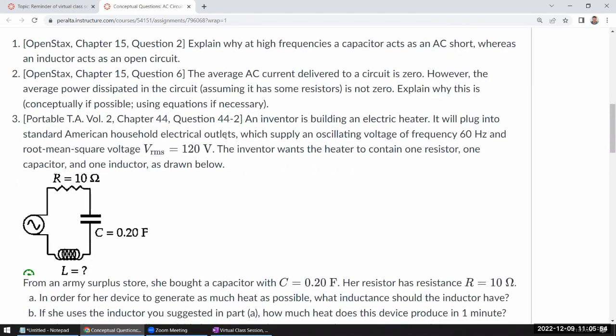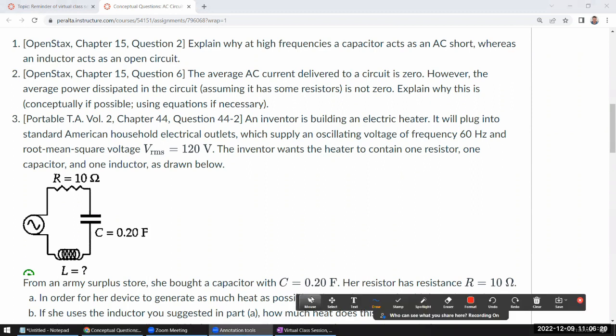Question two from chapter 15 asks: explain why at high frequencies a capacitor acts as an AC short, whereas an inductor acts as an open circuit. The easiest way to answer questions like this would be to appeal to impedance, which your textbook covers also. They do it in terms of phasors and reactants. That's perfectly fine. I do it in terms of complex impedance.